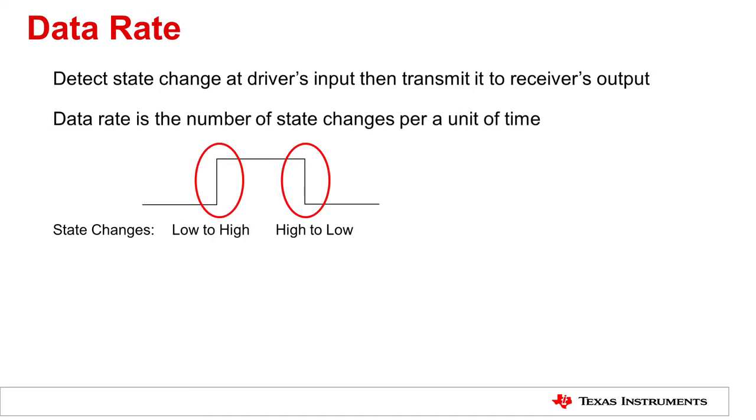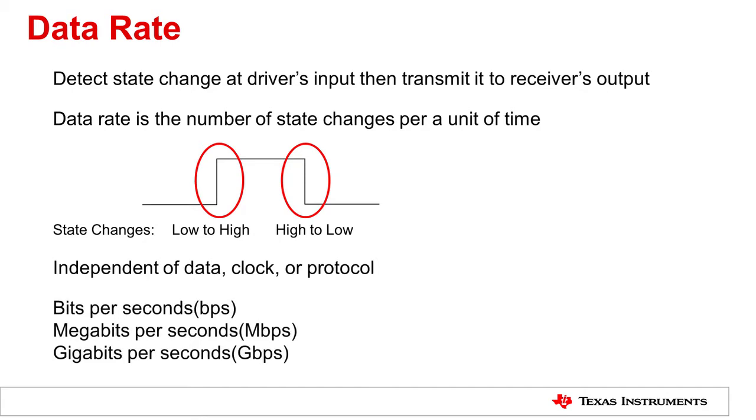The data rate is simply the number of state changes made per unit of time. It does not distinguish between data, clock, nor does it depend upon the bus architecture or protocol. It merely describes the speed at which a single bit is transmitted and received. Hence the unit bits per second is used.